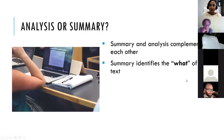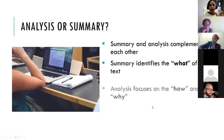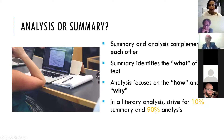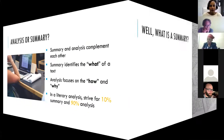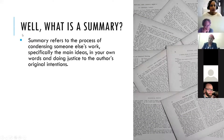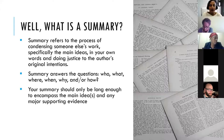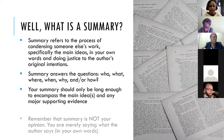Of course the two work together — you do have to have some summary in a literary analysis, but make sure we know what we mean by summary. A summary identifies the what — what happens. Analysis focuses on the how and the why. The balance between summary and analysis is more of a 90/10 ratio: 10% summary, 90% analysis. Tell us what's happening but spend more time telling us why that matters. Summary refers to the process of condensing someone else's work — specifically the main ideas — stating it in your own words and doing justice to the author's original intentions.